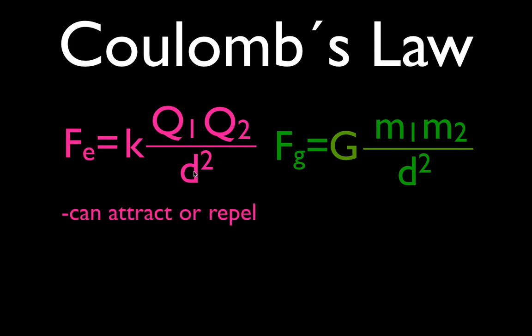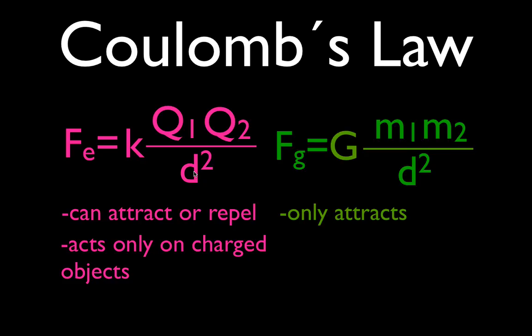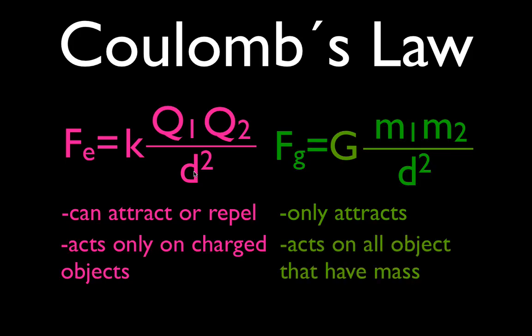The electric force can attract or repel, which is different from the gravitational force, which can only attract. The electric force acts only on charged objects, while the gravitational force acts on all objects that have mass. So the electric force is K times Q1 times Q2 divided by D squared, and the gravitational force is G times M1 times M2 divided by D squared — very similar forms, very different objects.